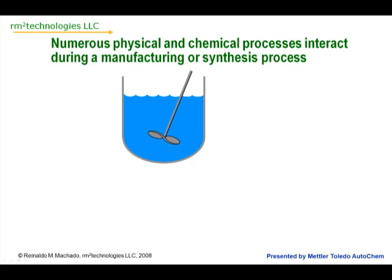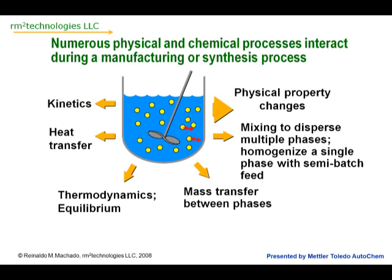There are numerous physical and chemical processes that interact during a manufacturing or synthesis process in a stirred tank. Kinetics, which is the rate at which chemical reactions occur. There's heat transfer — the rate at which we're removing heat from an exotherm or adding heat in an endotherm. We have thermodynamics. Also, we have phase mass transfer between the phases that can occur: solid-liquid, liquid-liquid, and gas-liquid.